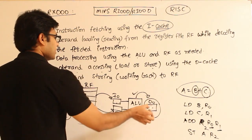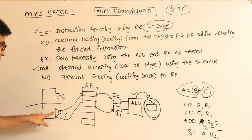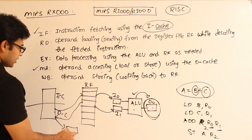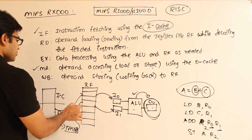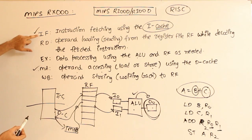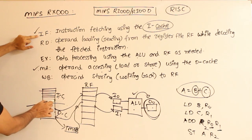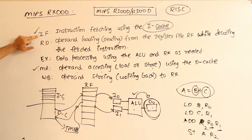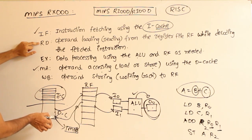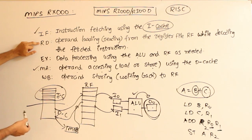The last phase is WB — operand storing, writing back to the register file. Whatever has been read during memory access comes into the memory data register, and from there it is moved to the corresponding registers in the register file so it is available for subsequent operations. To summarize: in instruction fetch, only the I-cache is accessed — so there is no structural dependency on that resource.